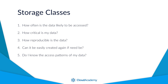Amazon Glacier is another storage class, however it is also a separate service to Amazon S3. There are interactions between the two services where S3 allows you to use lifecycle rules to move data from S3 to Glacier as a standard storage class for archival purposes, and I will cover more on Amazon Glacier in the next lecture.